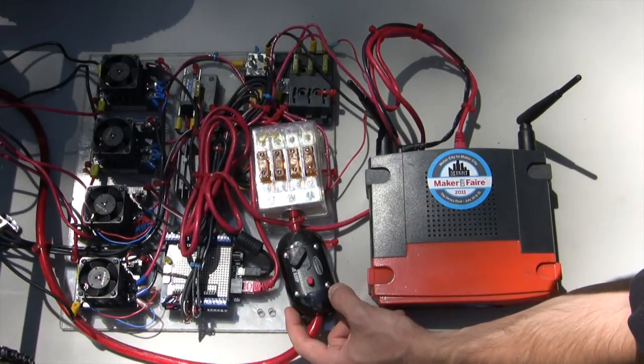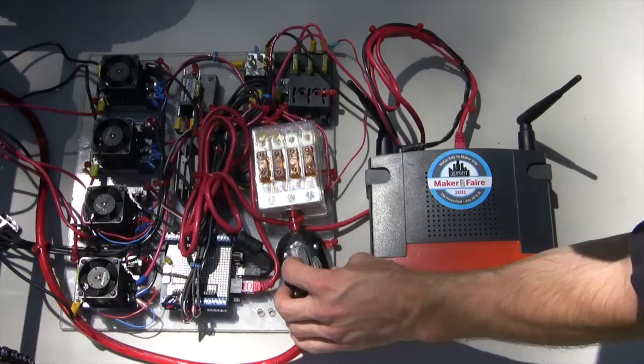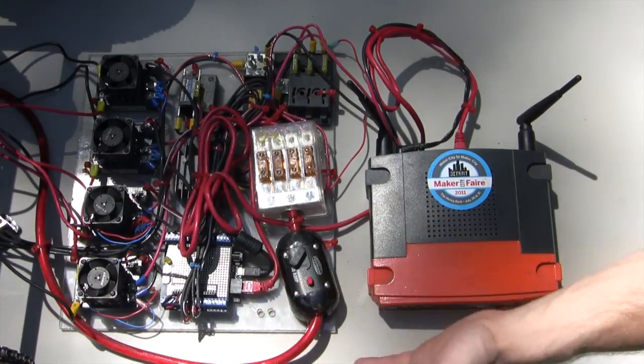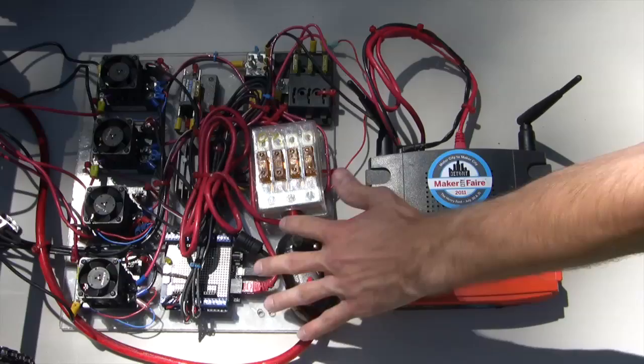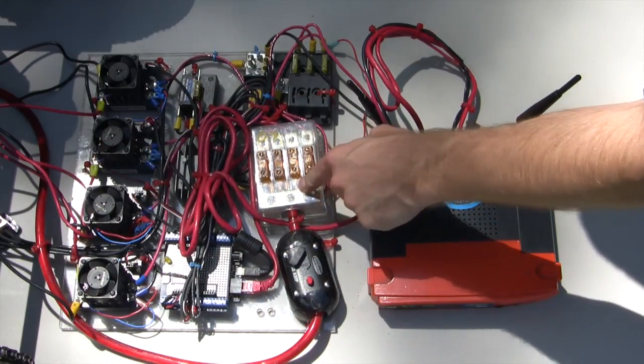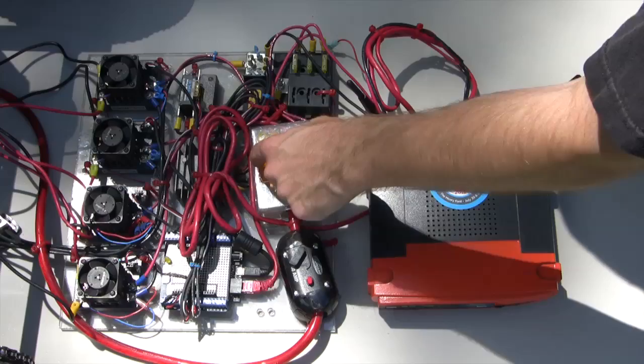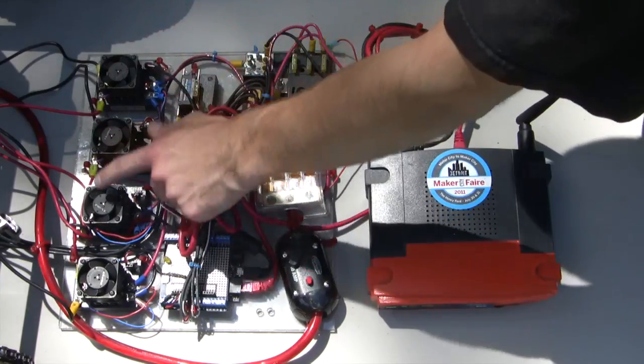This feeds into a 140-amp breaker right here, so we can turn the robot on and off really easily just like this. Or if the robot ever exceeds 140 amps, which it shouldn't, but if it does, it will kill the robot. This is fed directly into our first main fuse block, and we just have 40-amp fuses in each one of these, and each one of these goes to our speed controllers.